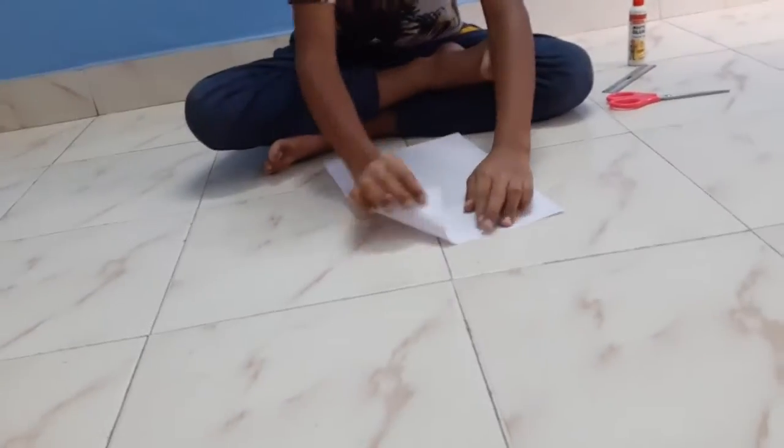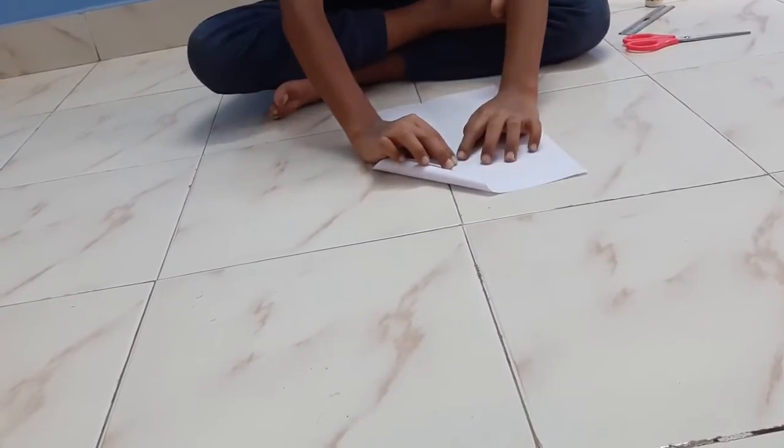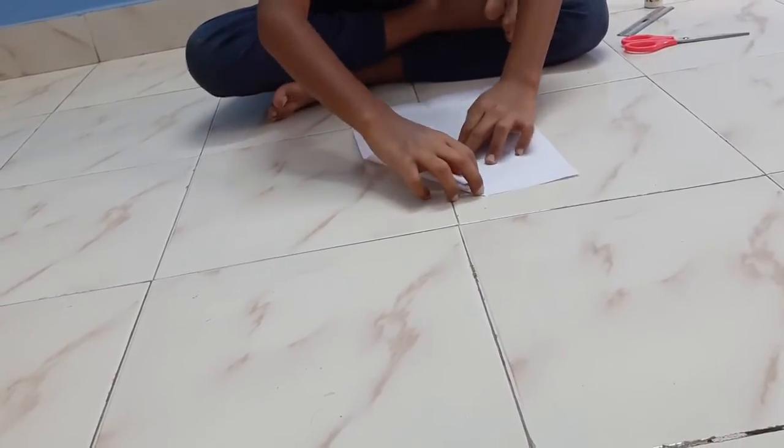Now we will open it and then till the half line we will make this triangle from both the sides like this.